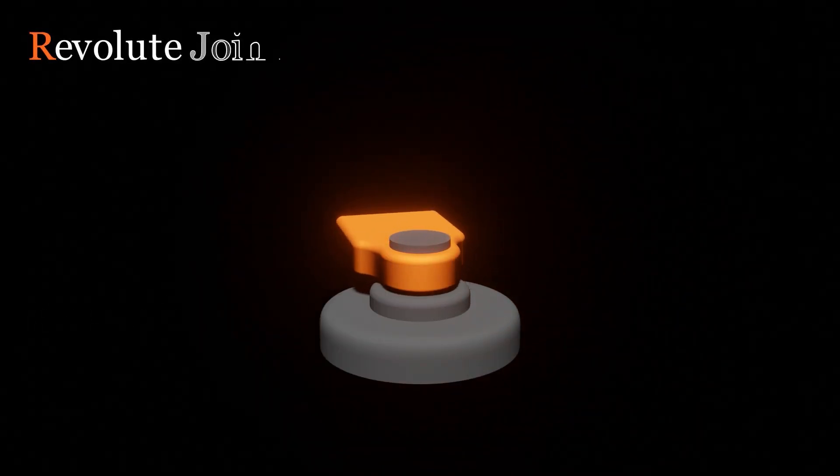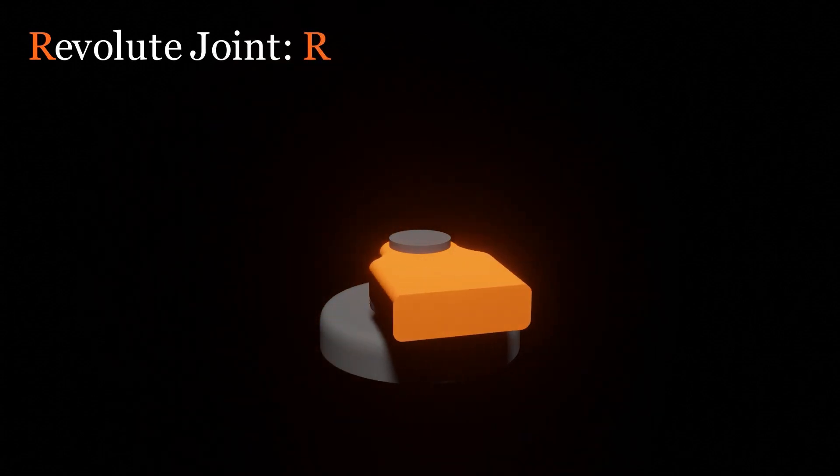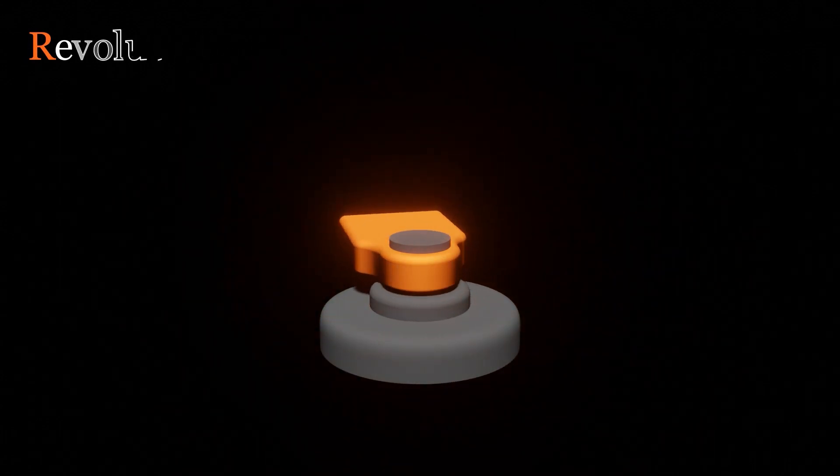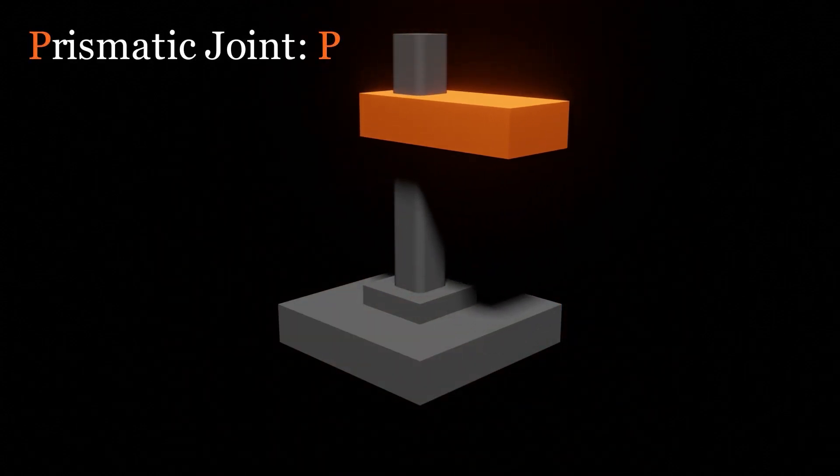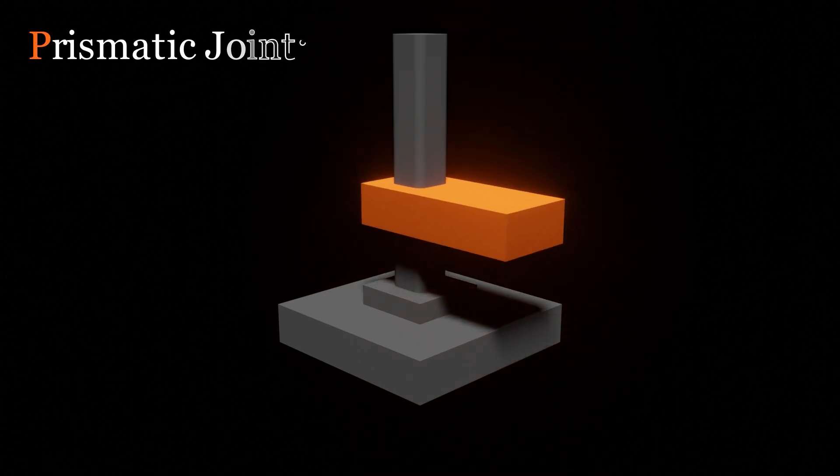A revolute joint is one where the relative motion is pure rotation about a single axis. A prismatic joint is one where the relative motion is pure translation along a single axis.